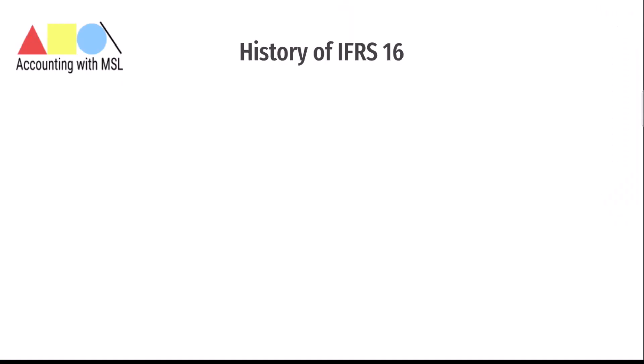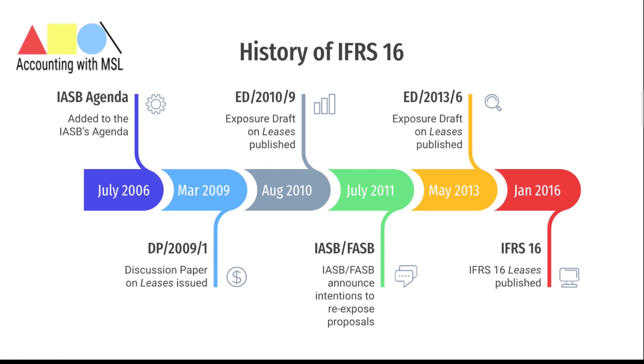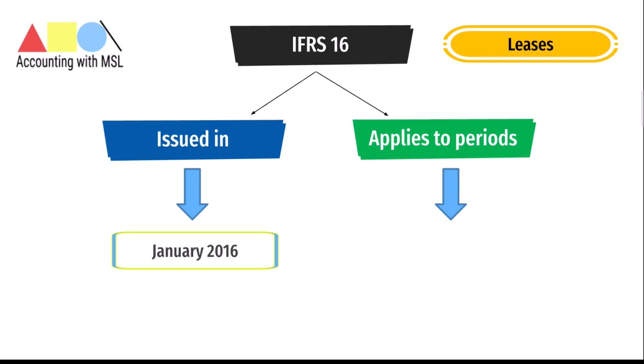This standard has been through a number of changes right from July 2006 when it was on the IASB's agenda, all the way through to January 2016 when the current form of IFRS 16 was issued by the International Accounting Standards Board. IFRS 16 leases applies to annual reporting periods beginning on or after 1st January 2019.